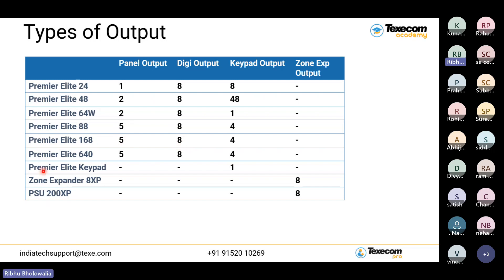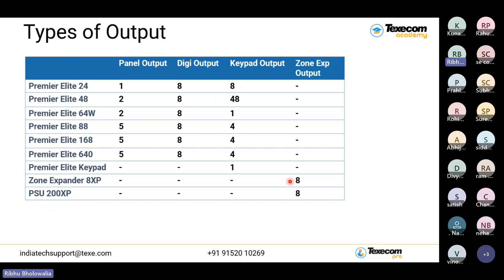Coming to the next category — keypads. In Texicom, we have wired keypads available, and in all wired keypads you get one output. Then the zone expander 8XP — used for increasing the number of wired zones — also has eight outputs available. Similarly, the PSU 200XP industrial-grade expander also has eight outputs available.